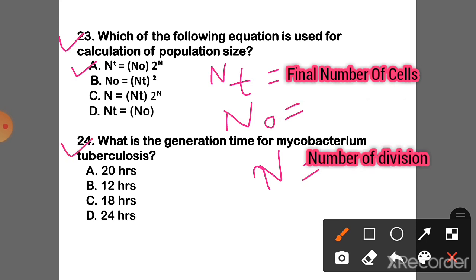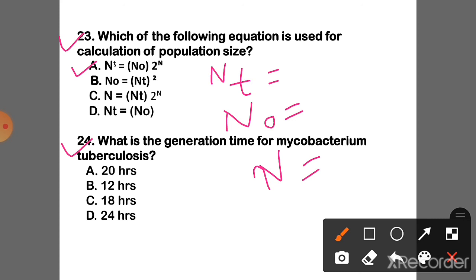Question 24: What is the generation time for Mycobacterium tuberculosis? The correct answer is Option C — 18 hours.